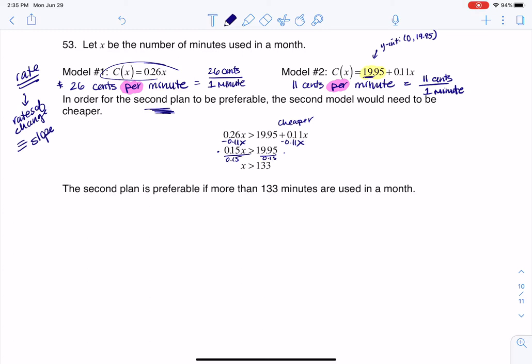And because I'm dividing by a positive number, I don't need to change the direction of the inequality. And I get x has to be greater than 133. So I'm going to choose the second plan if I'm talking more than 133 minutes in a month. All right, thanks so much everyone. Bye.